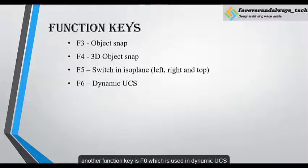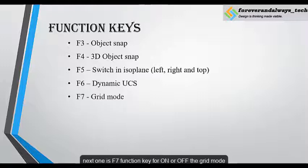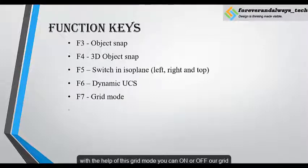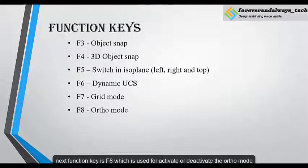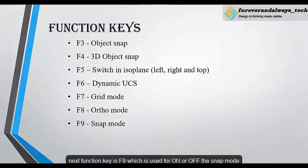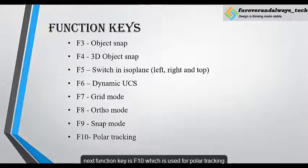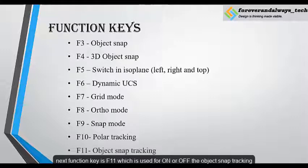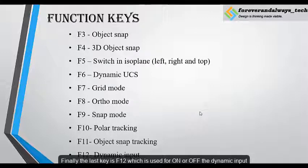Another function key is F6, which is used for dynamic UCS. Next is F7 for turning the grid mode on or off. Next function key is F8, which is used to activate or deactivate ortho mode — with ortho mode we can draw straight horizontal or vertical lines. Next is F9 for turning snap mode on or off. Next function key is F10, which is used for polar tracking, helping to draw a line at multiples of a set angle. Next function key is F11, which is used to turn object snap tracking on or off. And finally the last key is F12, which is used to turn dynamic input on or off — dynamic input is the tooltip which guides us to draw our drawing.